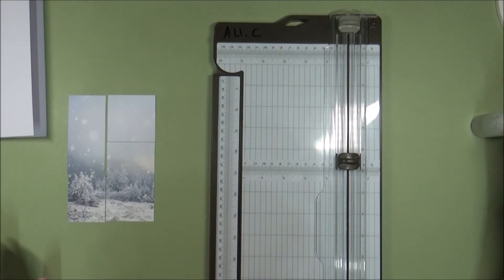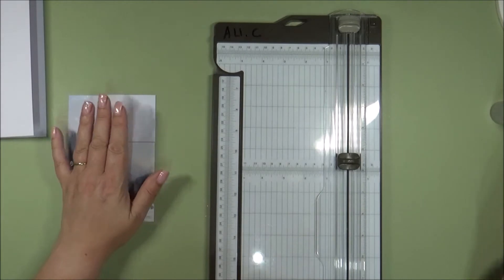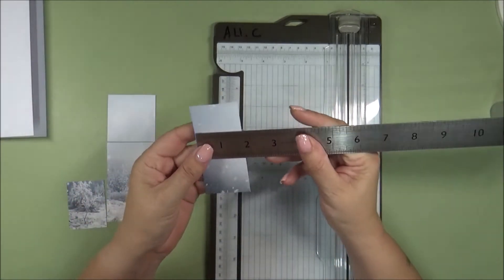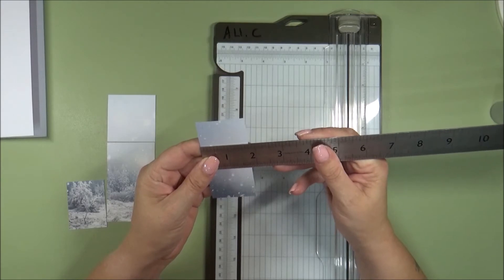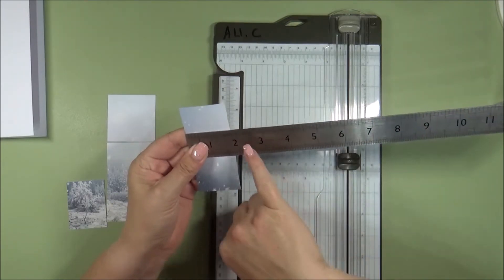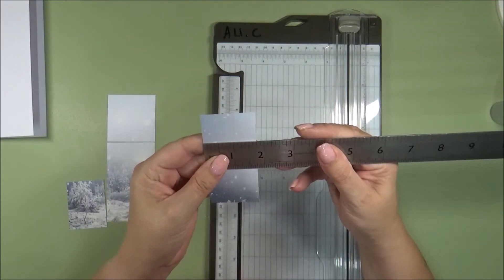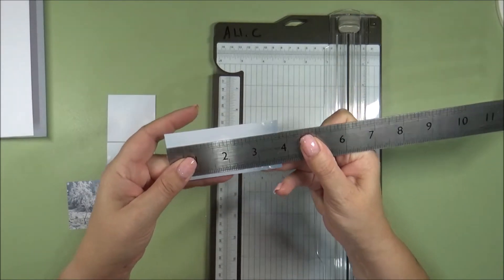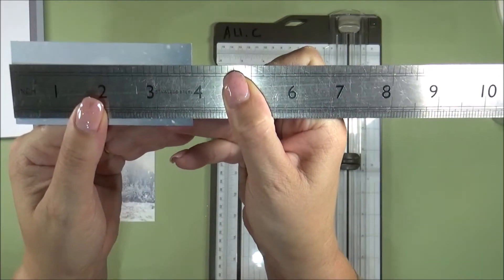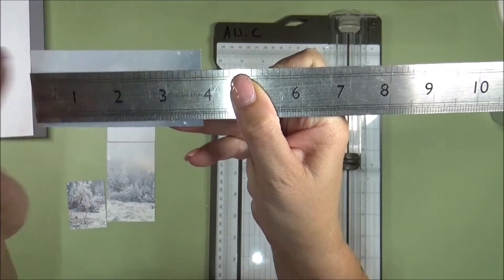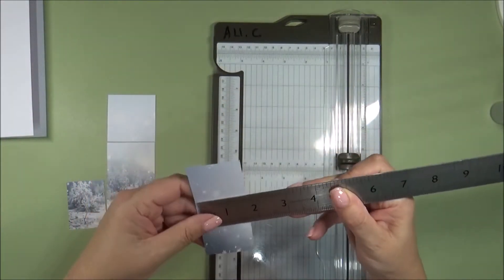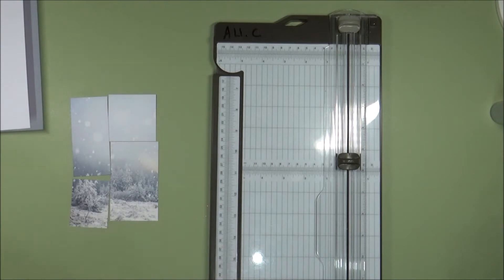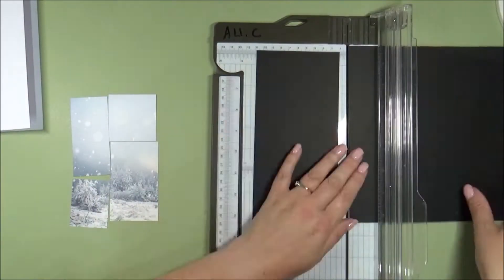So once you've got those pieces, we're then going to mat those onto black cardstock. And so just measure your pieces of pattern paper. So this is 1 3⁄4 and I'm just going to do it an eighth of an inch bigger. So if that's 1 3⁄4, I'm going to cut that at 1 7⁄8 and that's going to be 3 7⁄8. So I'm just going to do that one eighth there. One eighth bigger. So 3 7⁄8 by 1 7⁄8. So again, you want to do that with black cardstock or whichever color you'd like.